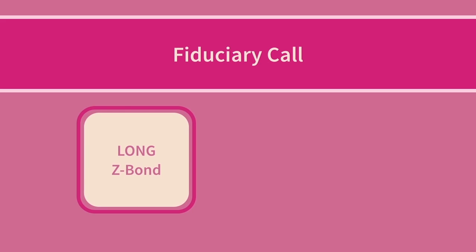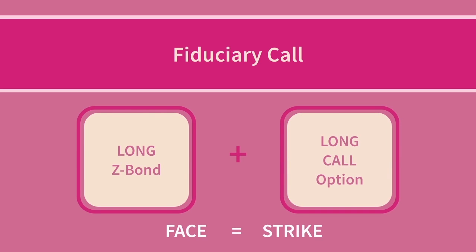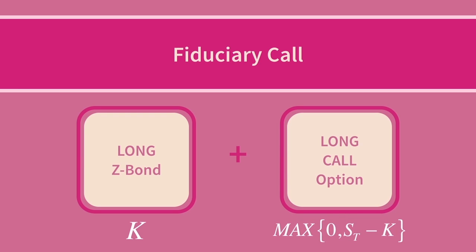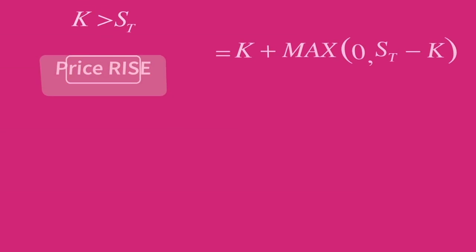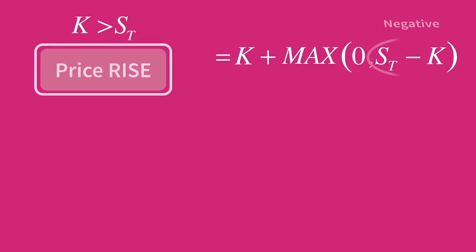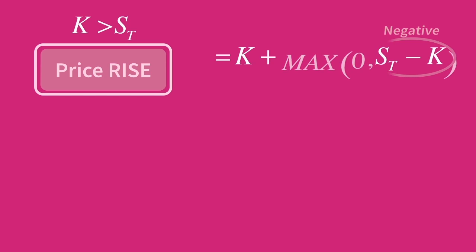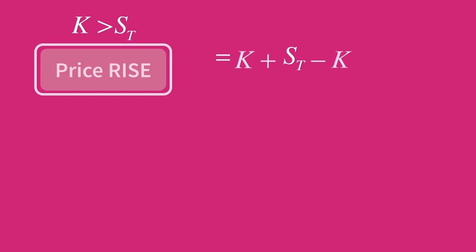A fiduciary call position is a combination of going long a risk-free zero coupon bond and buying a call option, where the face value of the bond equals the strike price of the option. At maturity, the risk-free bond will pay out its face value, the amount K, and on that date the expiry of the option will come with a payoff of either 0 or ST minus K. If the price of the call option's underlying rises, the call option will be exercised for a payoff of ST minus K, so the overall portfolio value in the event of a price rise is just ST.